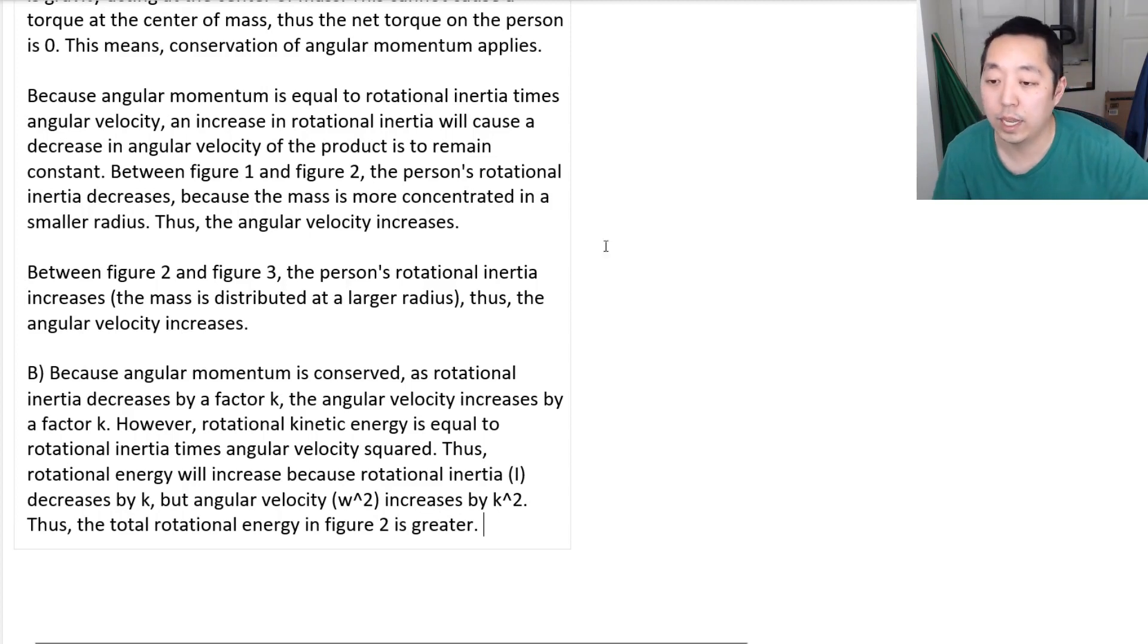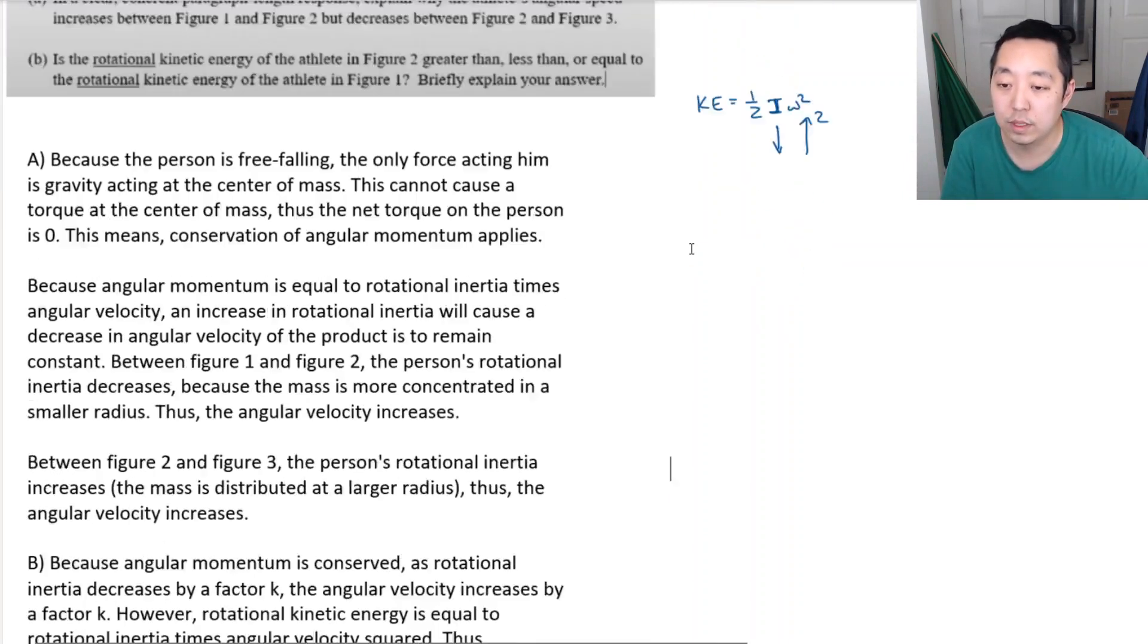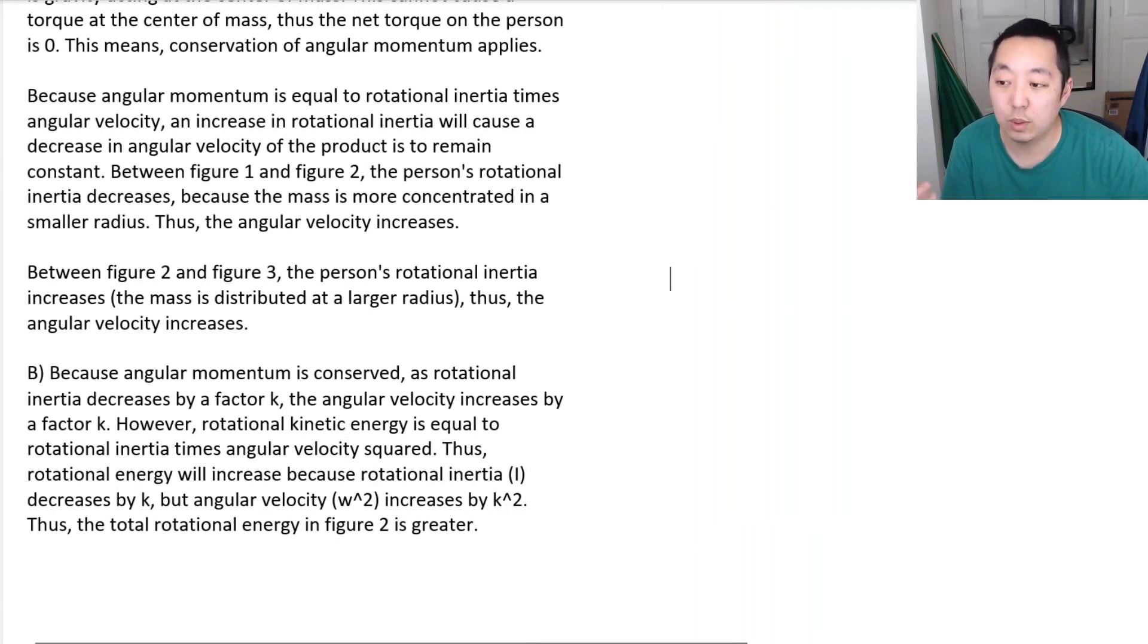So that's probably how I would explain it in terms of factors. You kind of say, like, I is going to go down by factor K. Omega is going to go up by factor K. But overall, I omega squared is going to go up by an additional factor there. And so that would, and that's all I would put.